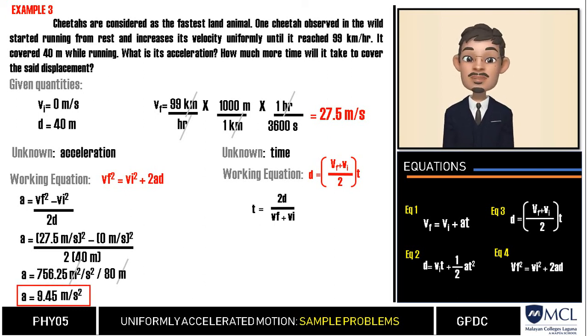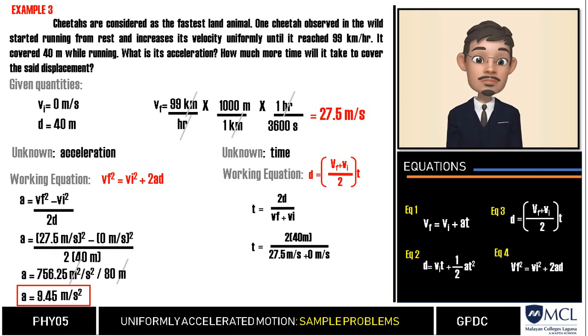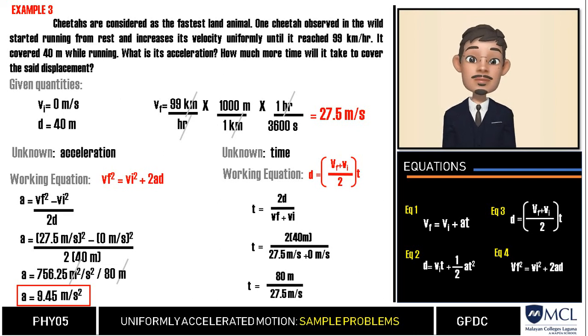We are done with acceleration and now we will compute time. For time, our equation is 2d over (Vi plus Vf). We will substitute the given as 2 multiplied by 40 meters over our initial velocity which is 0, and 27.5 meters per second, our final velocity.